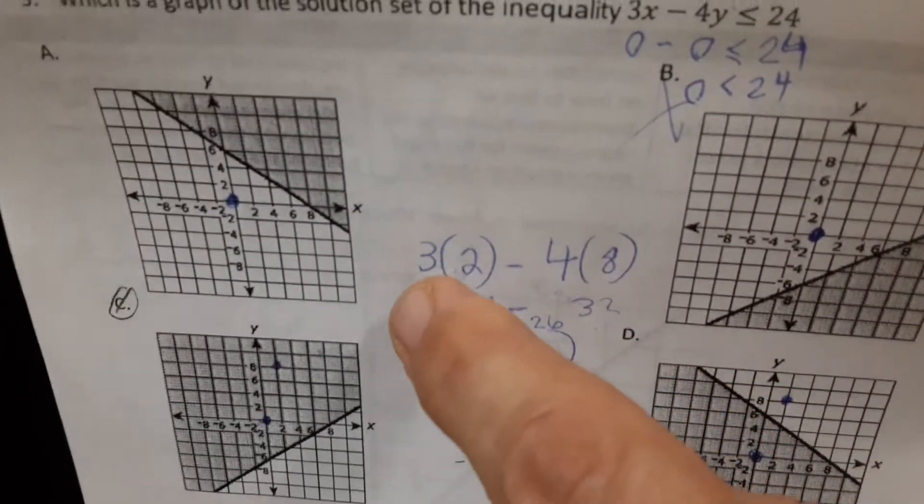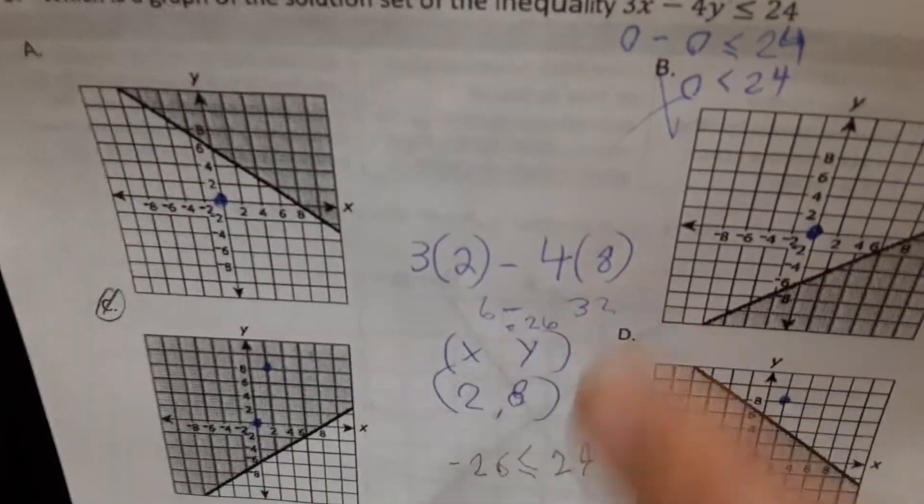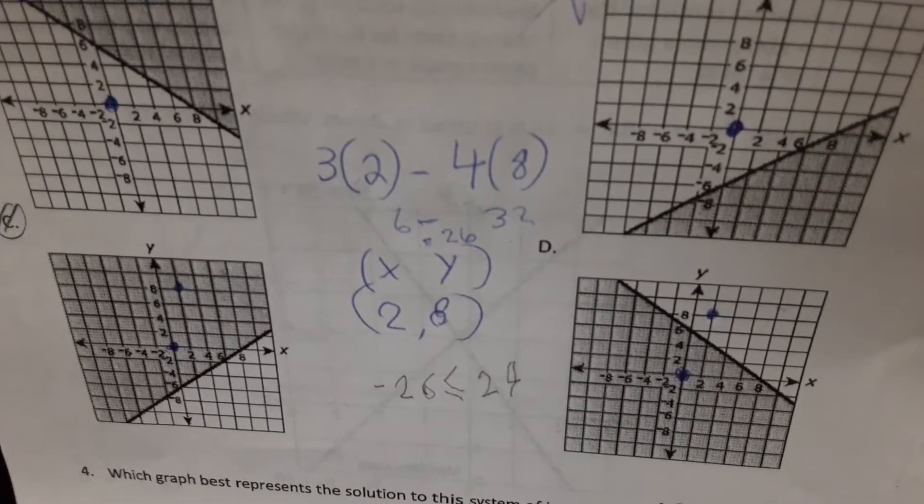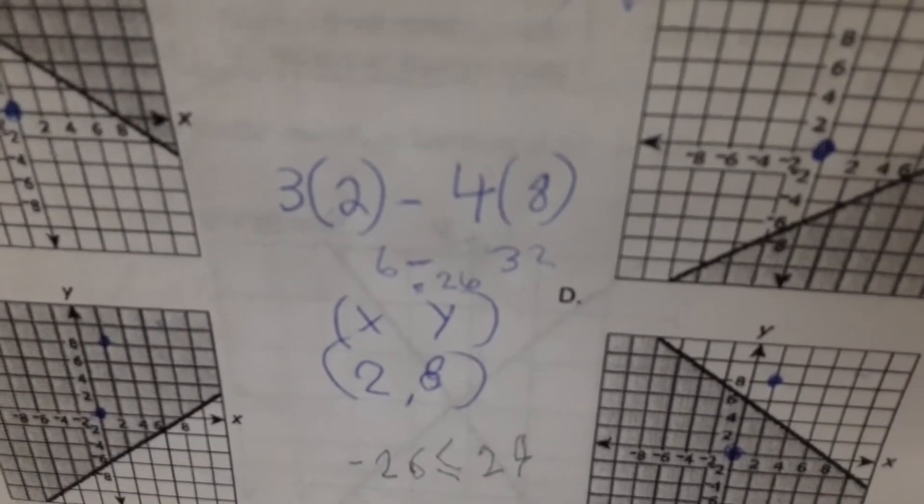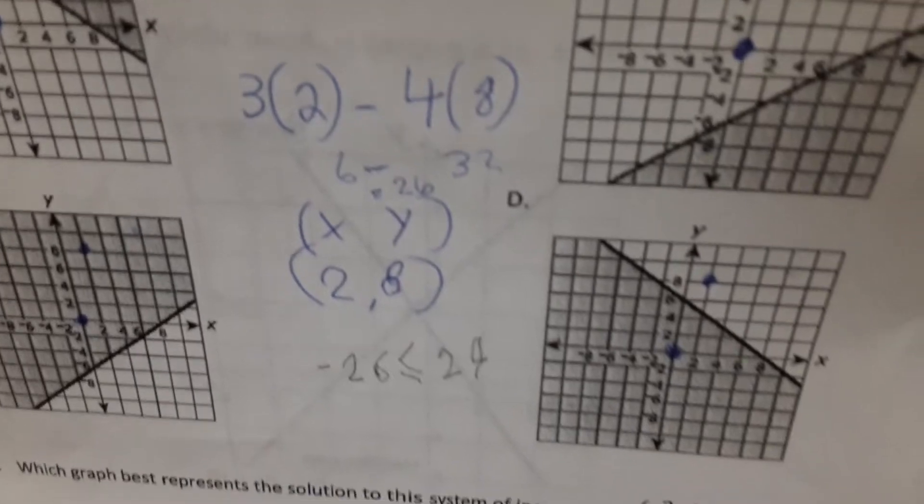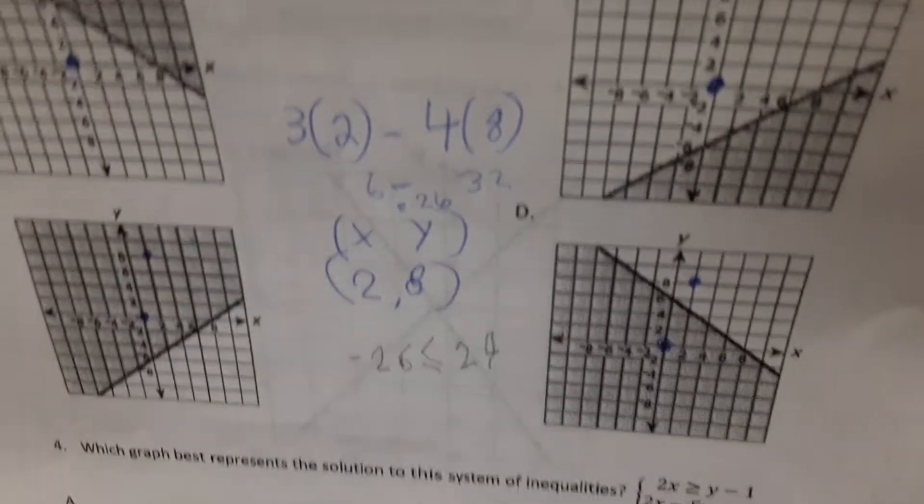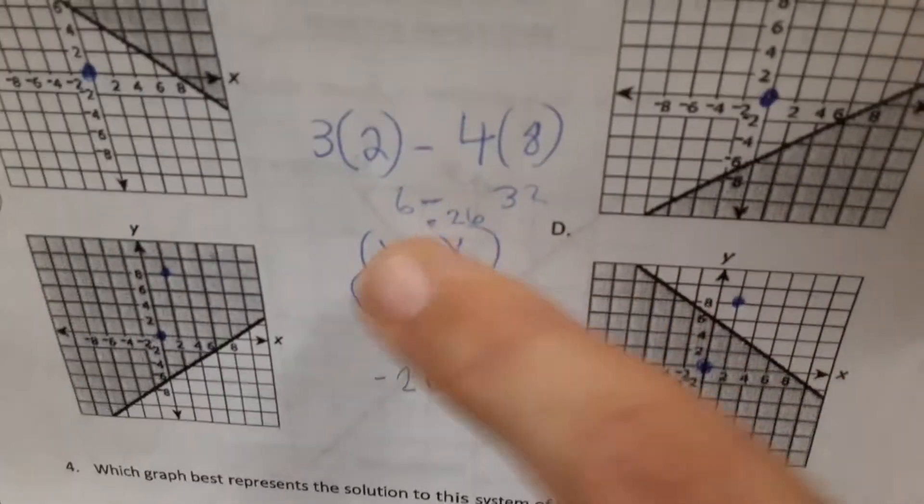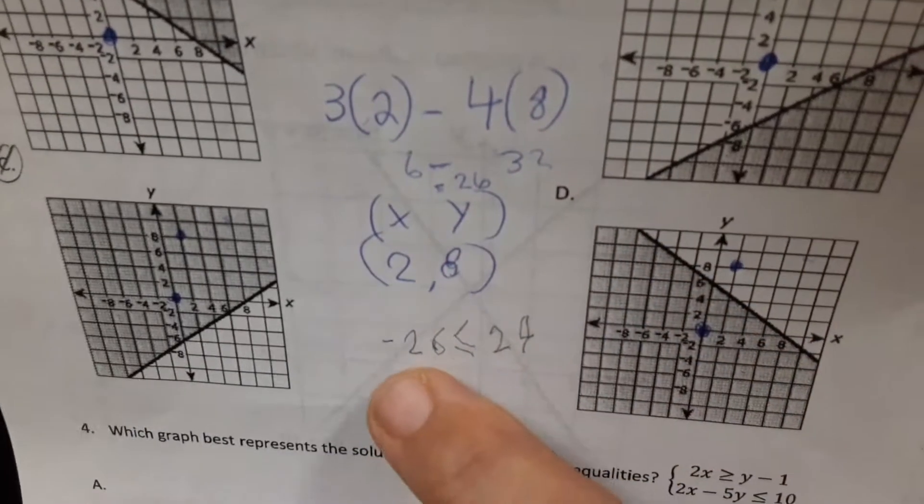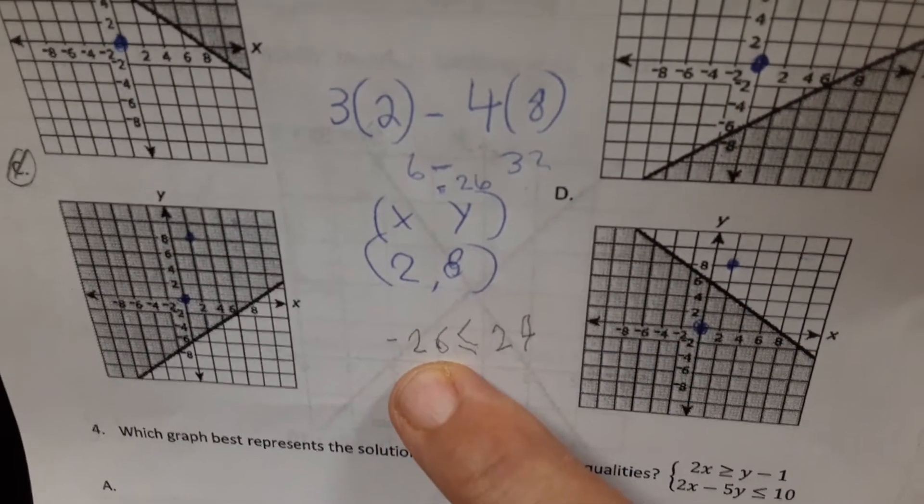So you plugged it in. You got 3 times x, that's 2, and 4 times 8. What did we get there? Negative 26 and negative 6. I mean, positive 6. Right, positive 6, negative 32, put them together. What answer did we get? Negative 26.